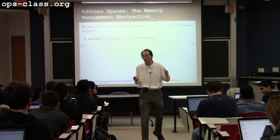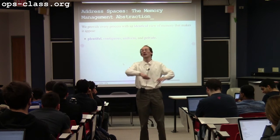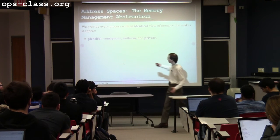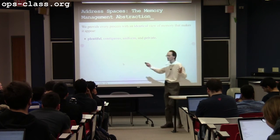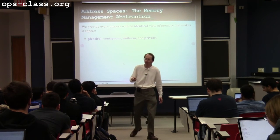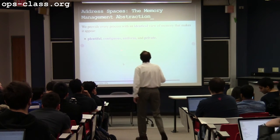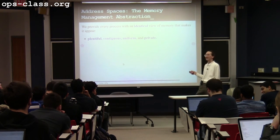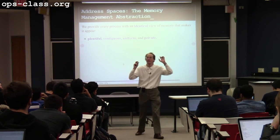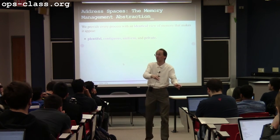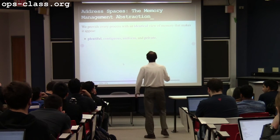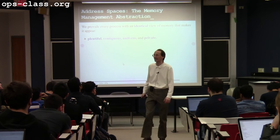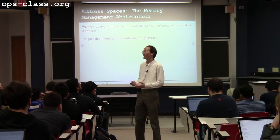Uniform and private are duals of each other. Being private means all processes can start their code segments at the same address because they're private to each process. If it's uniform, it had better be private — you can't have one without the other. So two birds with one stone.